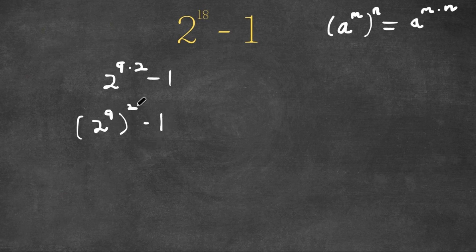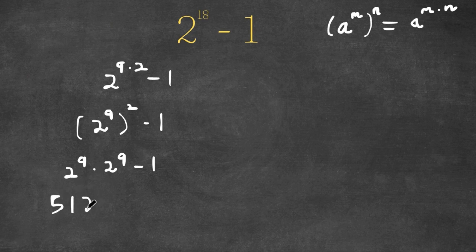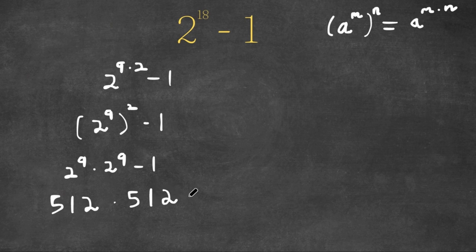And 2 to the power of 9, to the power of 2 — well, this can be written as 2 to the power of 9 times 2 to the power of 9, because it's just 2 to the power of 9 twice, minus 1. Now, 2 to the power of 9 is equal to 512. You guys should know that because you should memorize your powers of 2. So now we have 512 times 512 minus 1.